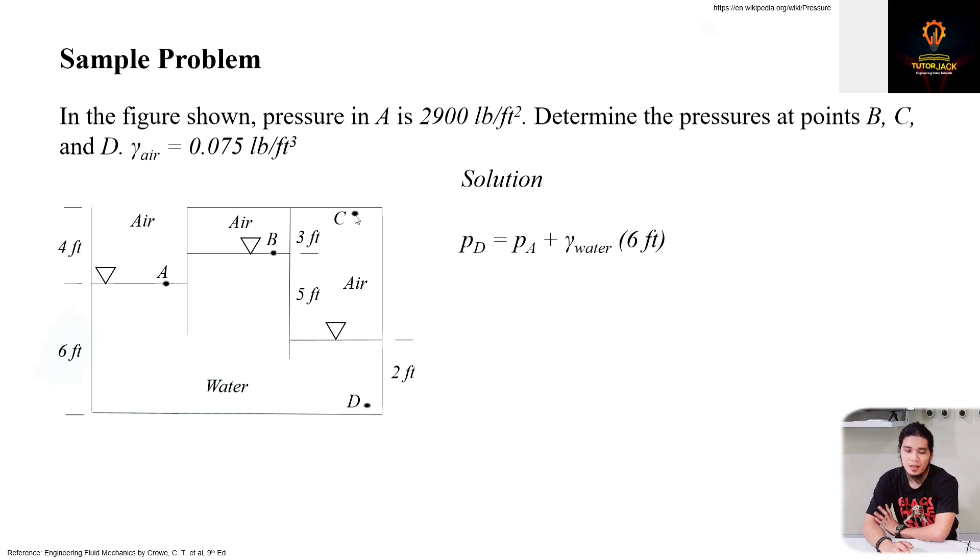For point D, this is easier. From A, you go directly to point D. So that's an increase in pressure because you decrease in elevation. So PA plus, that's why we have plus here.